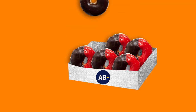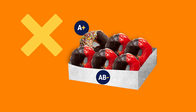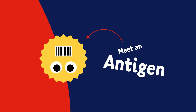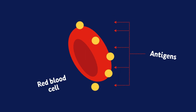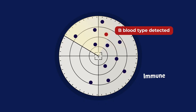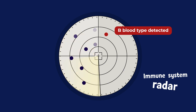While some blood types can be mixed, others can cause serious health issues for the recipient. And it's all thanks to microscopic molecules known as antigens, like this little guy. They act like little ID cards and can be found on the surface of red blood cells. The body's immune system uses them to identify friend from foe.